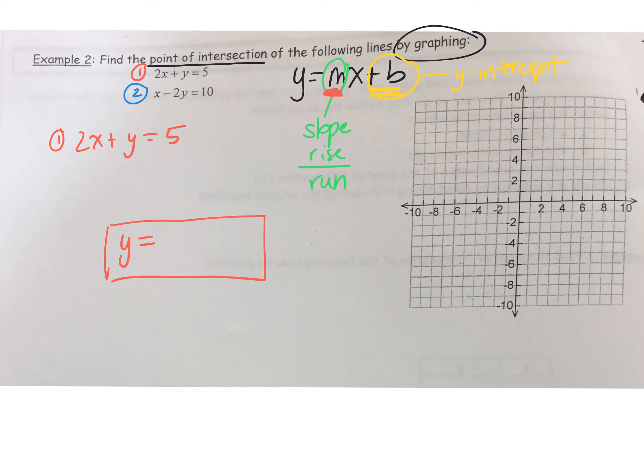I'm trying to isolate y. So on the left side we have 2x. How do I get rid of that? What's the opposite of plus 2x? Subtract 2x. Okay, so I'm taking away 2x from the left side, so what do I have to do to the right side? Do the same thing, so I have to also take away 2x. So I've gotten rid of this 2x.